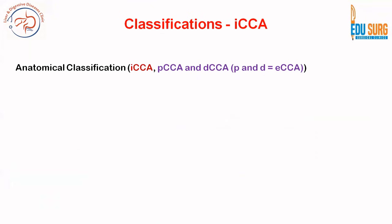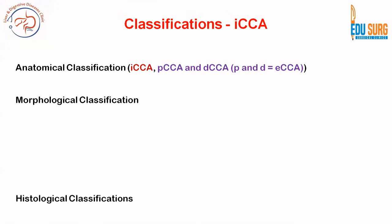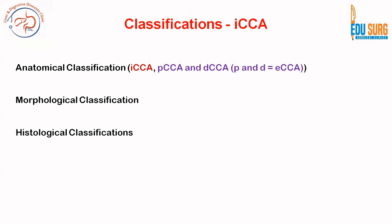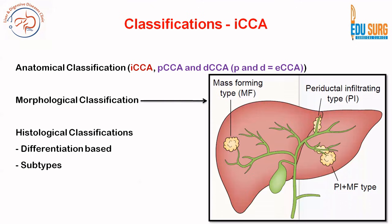This presentation will focus on classifications of intrahepatic cholangiocarcinoma. We have already seen the anatomical classification — intrahepatic, extrahepatic, perihilar, and distal. There is also a morphological classification and a histology-based classification. In histology there are subtypes and a differentiation-based classification.